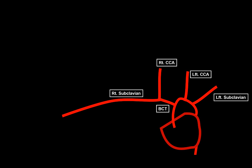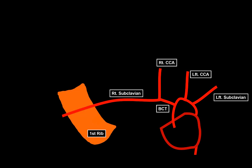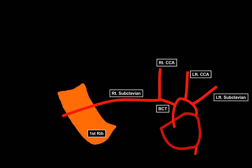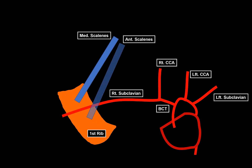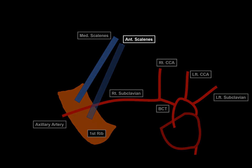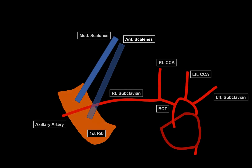The artery will run underneath the clavicle, essentially on top of the first rib — costa prima — running between the anterior and the medial scalenus muscle. As it passes the first rib, it continues as the axillary artery. Topographically, we divide the subclavian artery into three parts using the anterior scalenus muscle as a landmark. The first part is from the point of origin to the medial border of the anterior scalenus. The second part is behind the anterior scalenus. The third part is from the lateral border of the anterior scalenus to the border of the first rib, where it becomes the axillary artery.